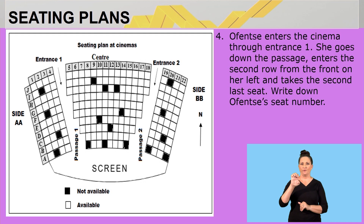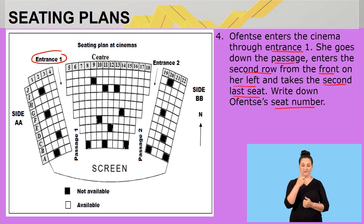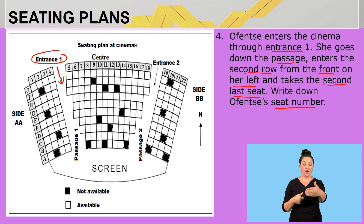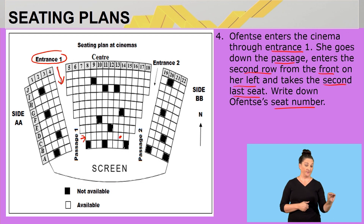Question four: Offensive enters the cinema through entrance one, goes down the passage, enters the second row from the front on the left-hand side, and takes the second last seat. Write down Offensive's seat number. Put yourself in the shoes of the person: she comes through entrance one, goes down the passage, enters the second row from the front — so this row here, since the first row is here — on her left-hand side, and takes the second last seat.